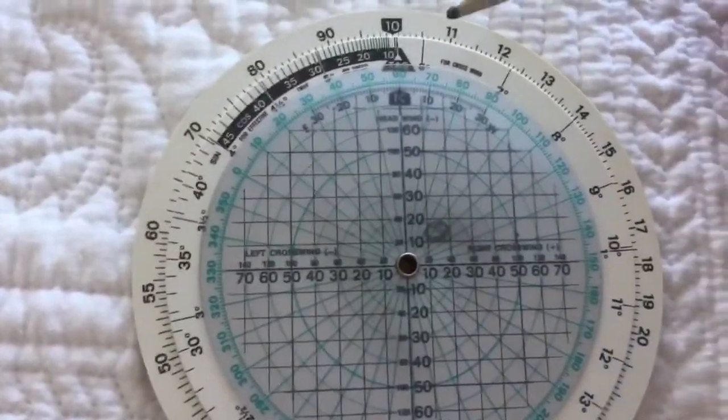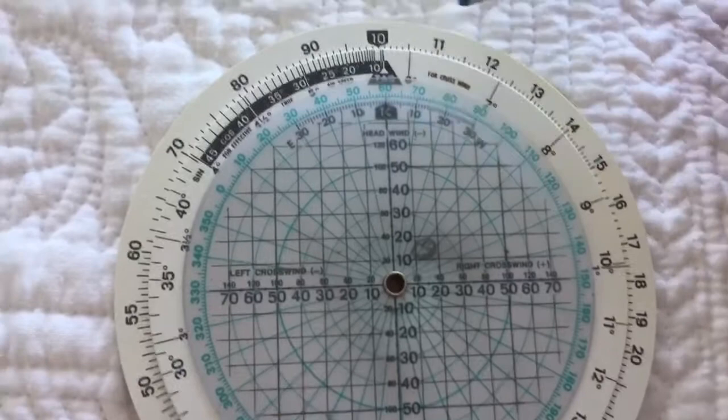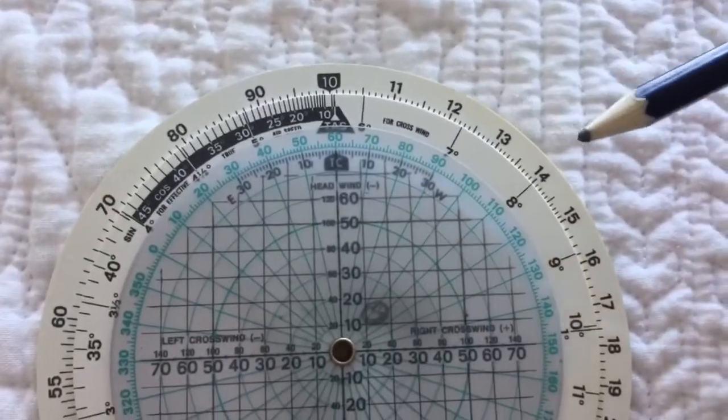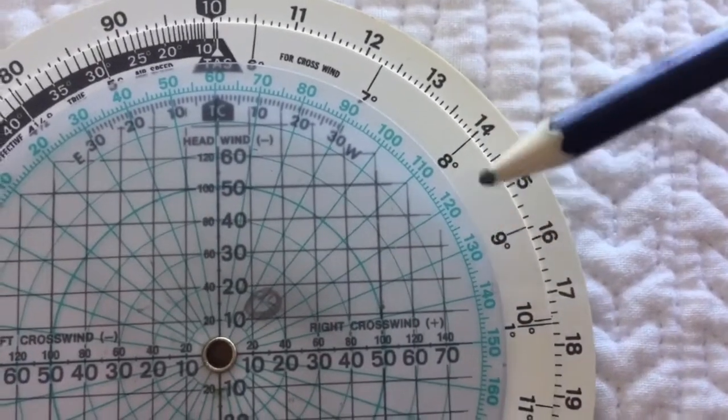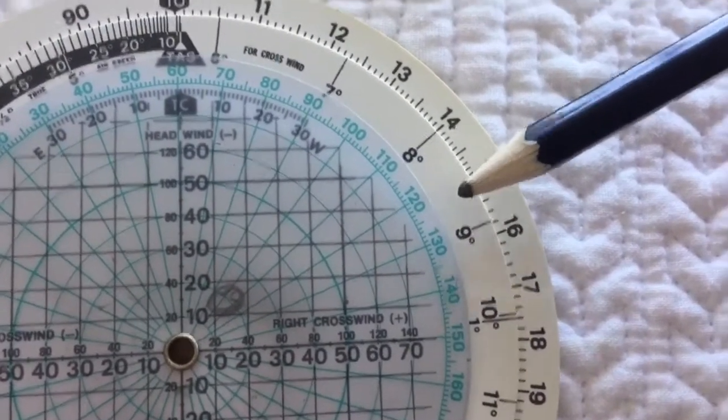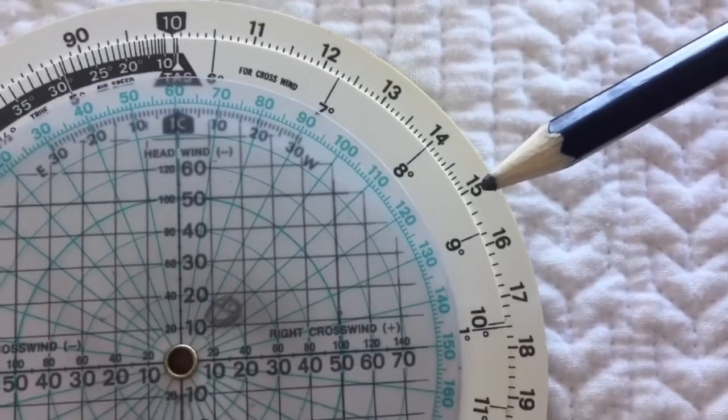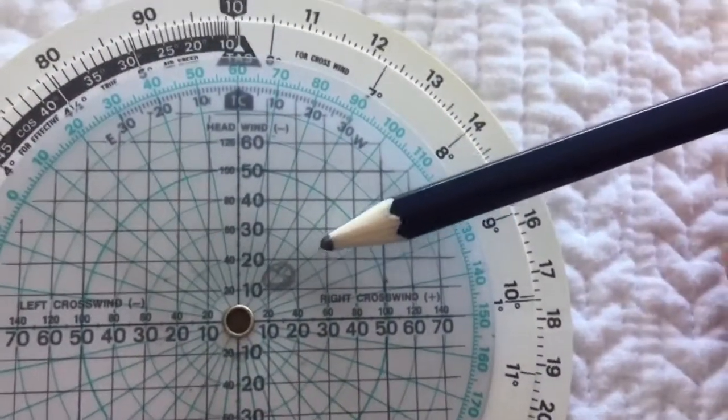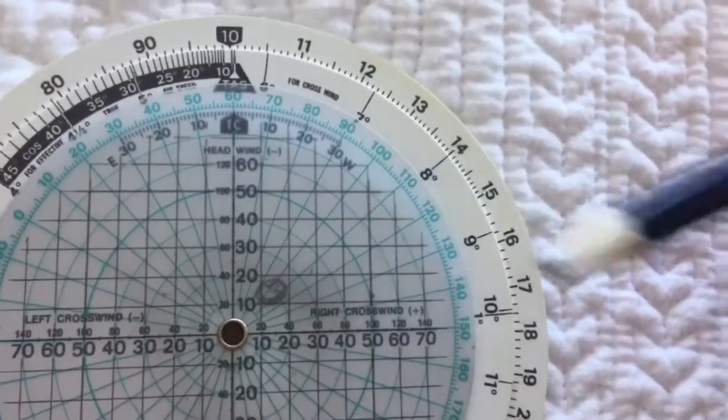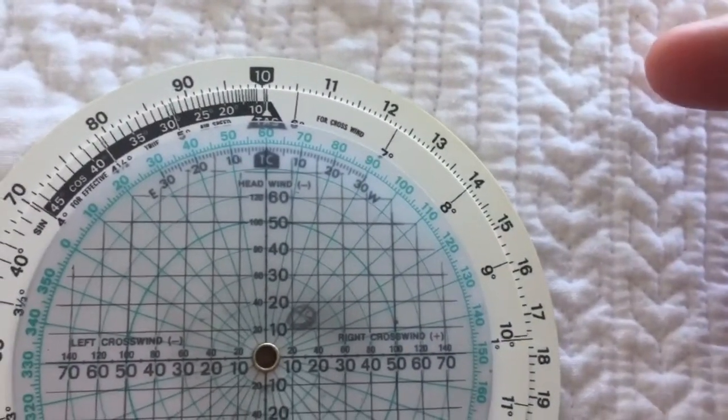So what we then do is come on our outer scale around to 15 knots of crosswind, and then these two here tell us how far we need to adjust. We need to adjust roughly eight and a half degrees to our right of track so that we don't get blown off track from the wind coming from our right.